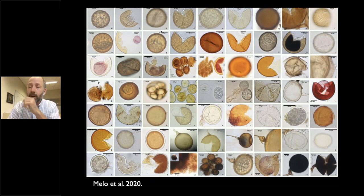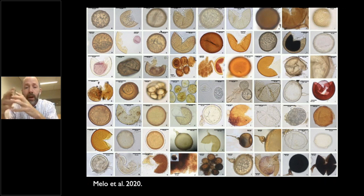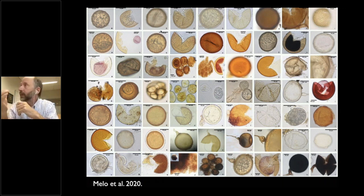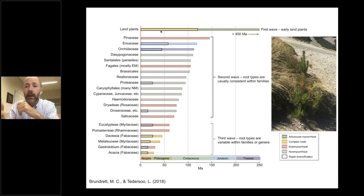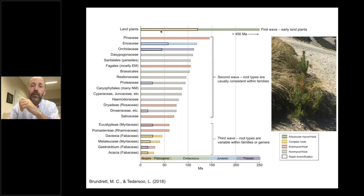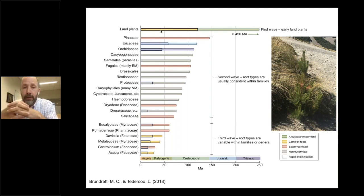That's how history went for the first couple hundred million years. But about 150 million years ago, something special happened: the evolution of pine trees. When they evolved, they evolved a whole new type of symbiosis with fungi. What they form are something called ectomycorrhizae.